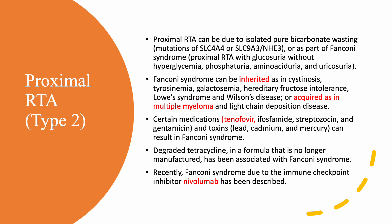In Fanconi syndrome you also have aminoaciduria — this is not proteinuria, just amino acids — and uricosuria, which is uric acid. So this is a total failure of the proximal tubules: wasting of bicarbonate, glucose, phosphate, amino acids, and uric acid.